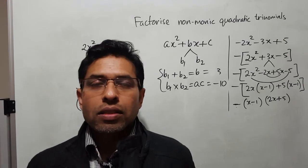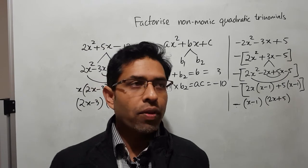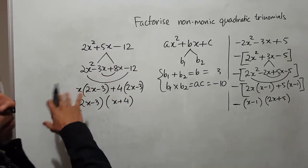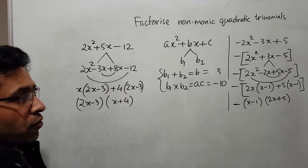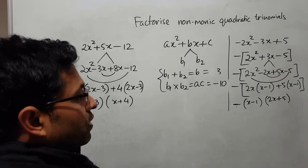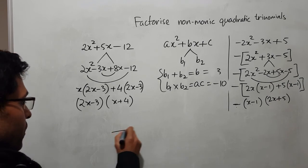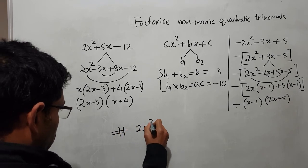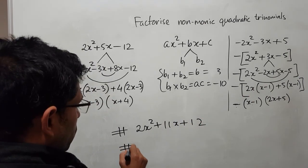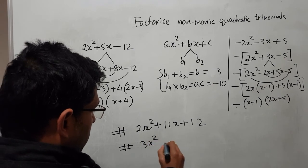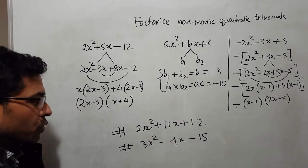I am leaving two questions for my students to answer. If you understand the explanation from the previous video and this one, I am pretty sure you can answer them. If you can't, go back to the video and try again. Question one: 2x squared plus 11x plus 12. Question two: 3x squared minus 4x minus 15. Factorize these two.